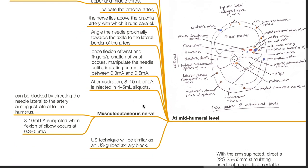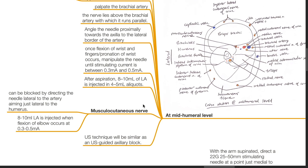The musculocutaneous nerve can be blocked by directing the needle lateral to the artery, aiming just lateral to the humerus. 8 to 10 mL of local anesthetic is injected when flexion of elbow occurs at 0.3 to 0.5 milliamps. The ultrasound technique will be similar as an ultrasound-guided axillary block.